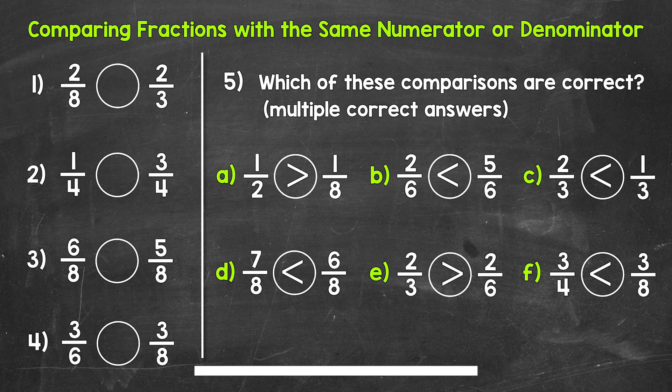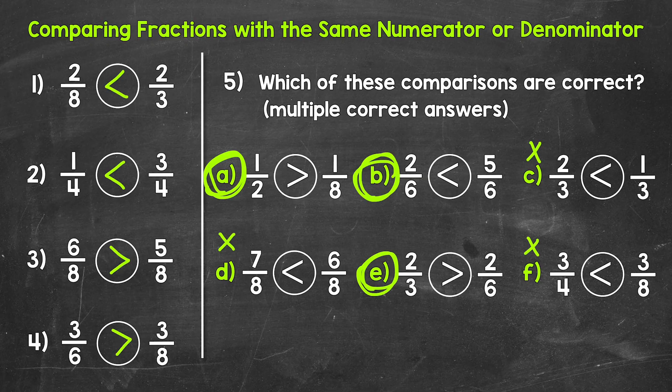Okay, so that's two minutes. Let's go over the answers. For number one, we have two-eighths is less than two-thirds. For number two, we have one-fourth is less than three-fourths. For number three, we have six-eighths is greater than five-eighths. For number four, we have three-sixths is greater than three-eighths. And for number five, the correct comparisons are A, B, and E.